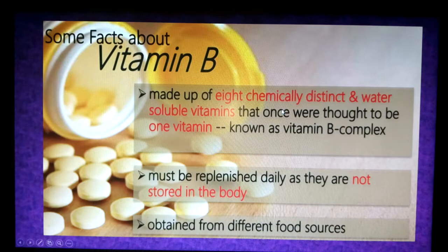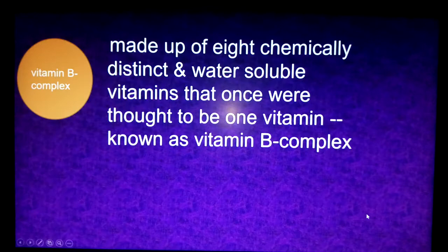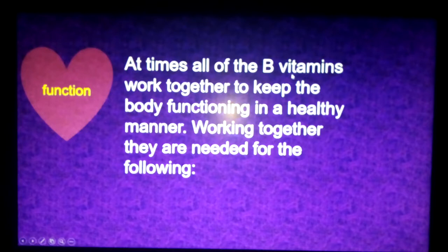Some facts about vitamin B: they are made up of eight chemically distinct, water-soluble vitamins that were once thought to be one vitamin, known as vitamin B complex. This name is no longer of great importance in medical fields. They must be replenished daily, as they are not stored in the body, and are obtained from different food sources. Vitamin B complex is the older name; 'vitamin B group' is the newer name.